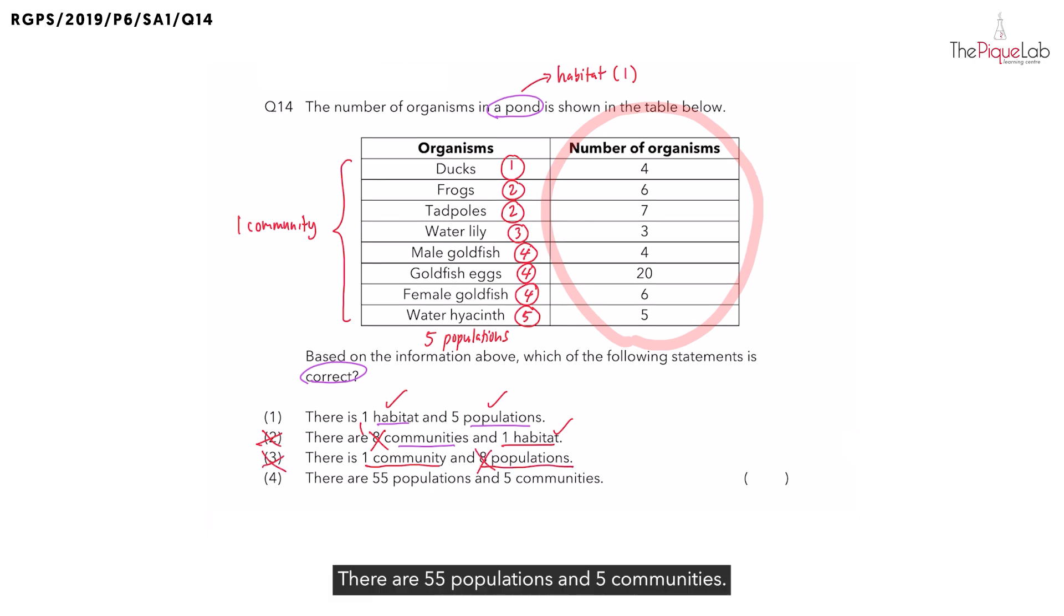Option four. There are 55 populations and five communities. Where did this number 55 come from? 55 actually represents the total number of organisms. And we know there are only actually five populations and one community. So, statement four is also not true, giving us the answer as option one.